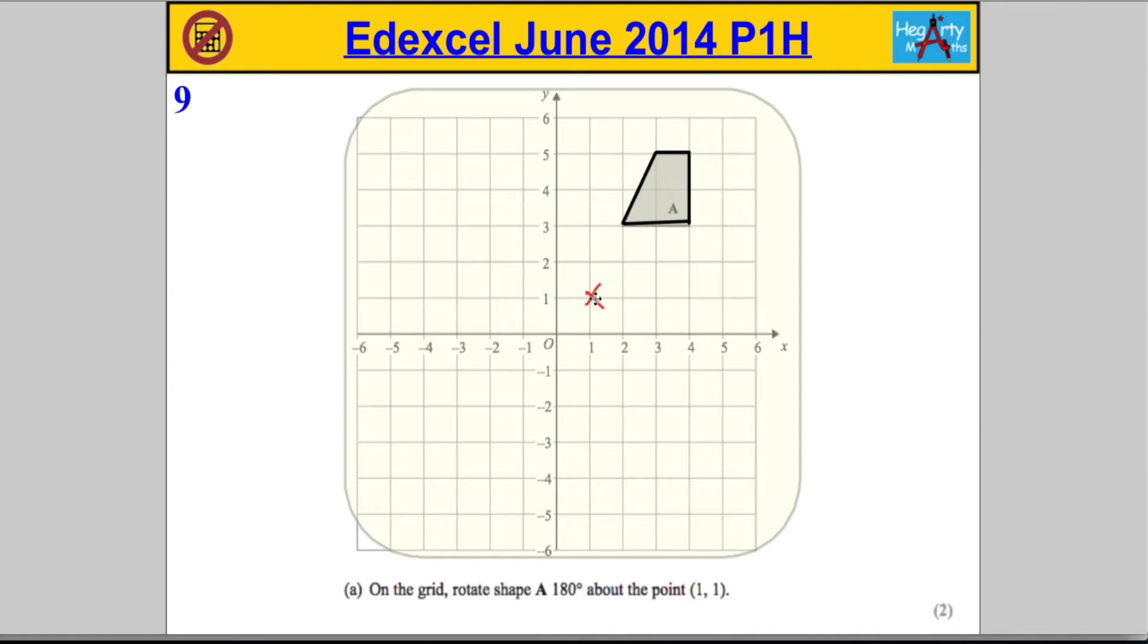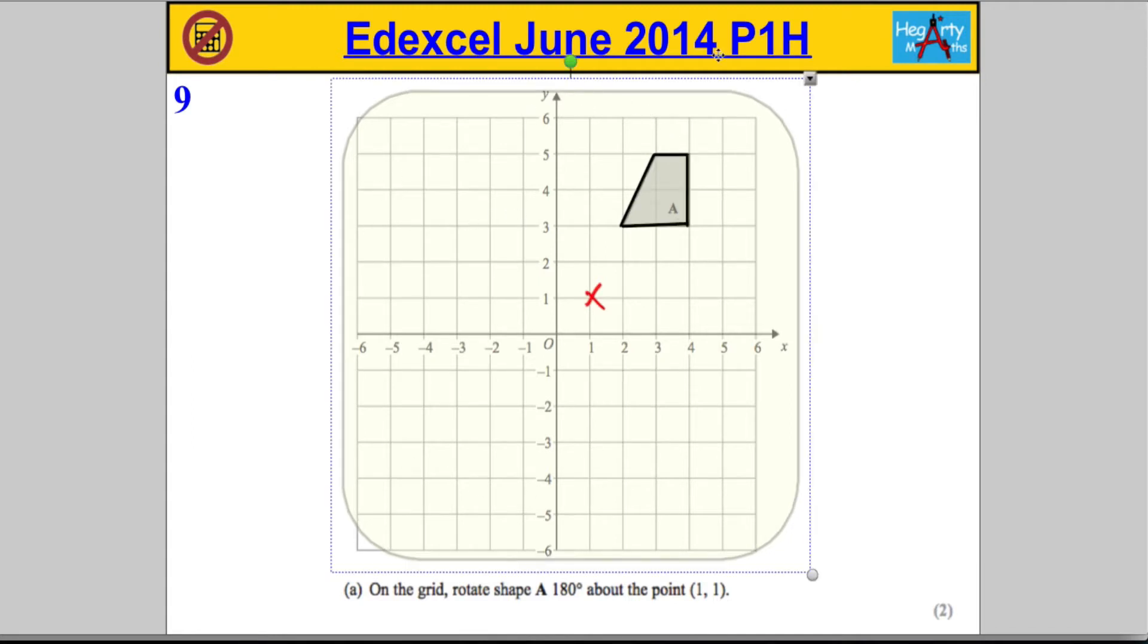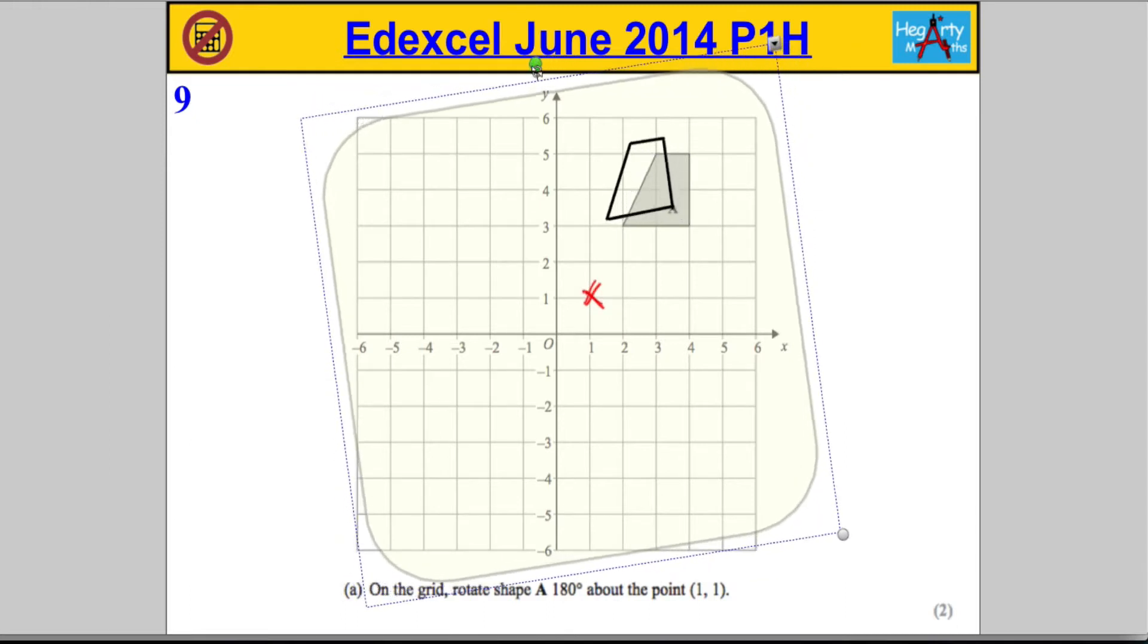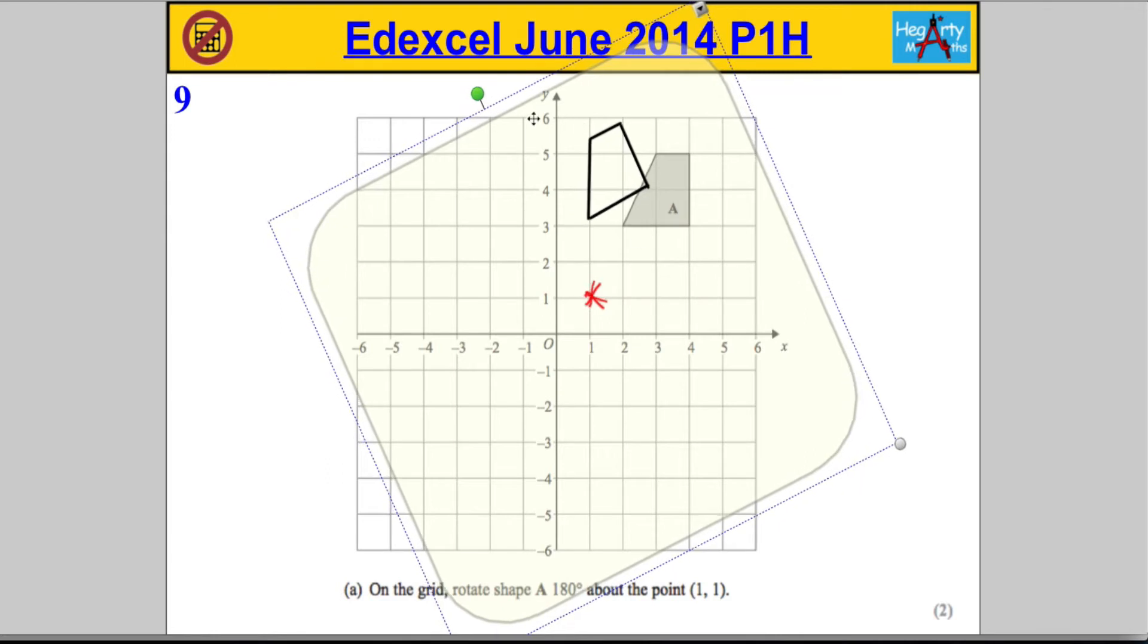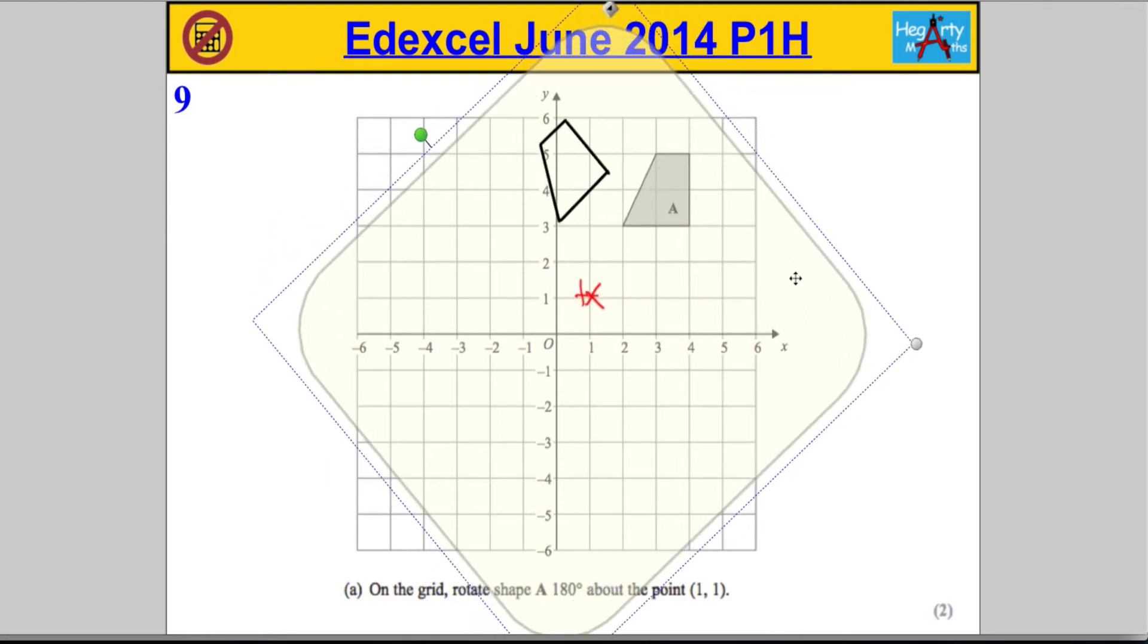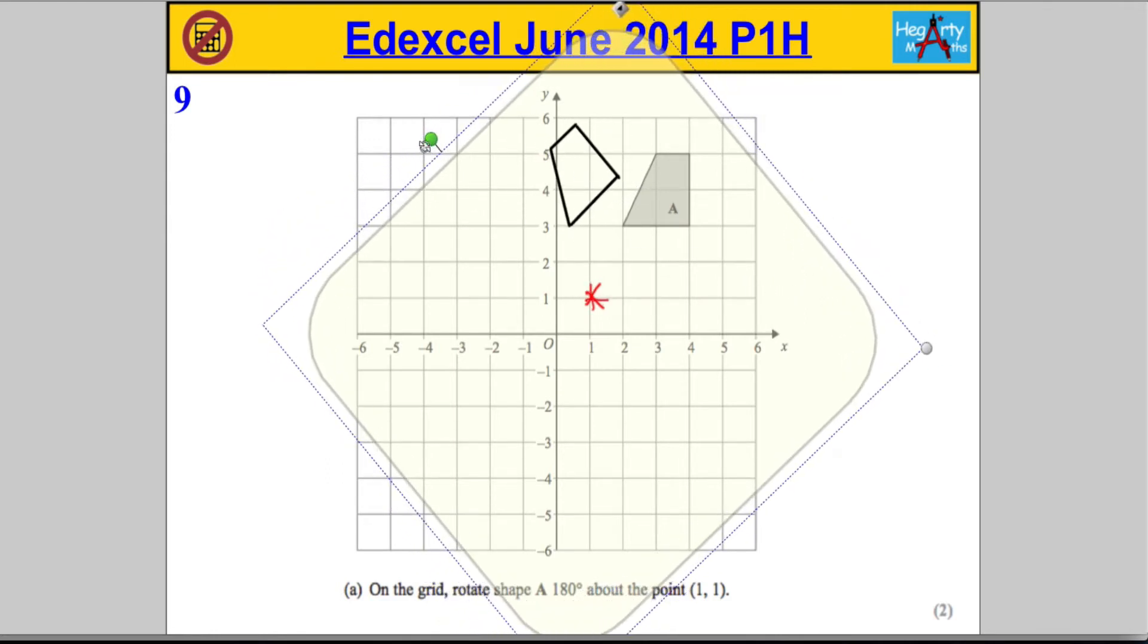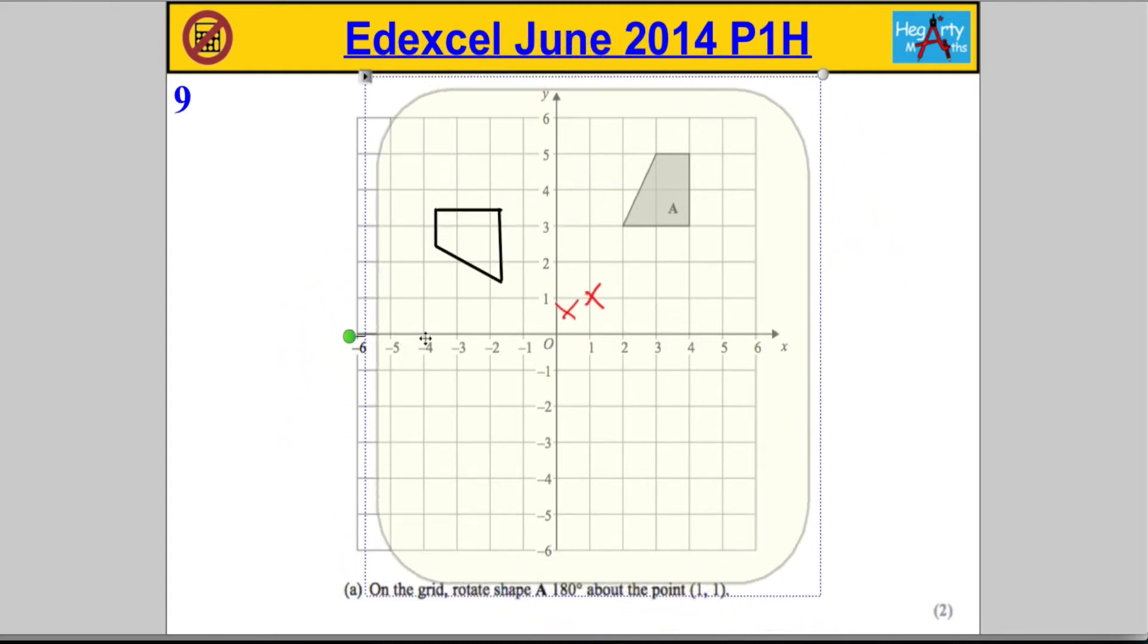Then we're going to hold our pencil down over the point that we've marked and turn the tracing paper. Turning that tracing paper 180 degrees - mine is going to go a little bit off because I can't hold it down. Turn it 180 degrees, just make sure the points are still lined up. That would be a 90 degree turn so far.